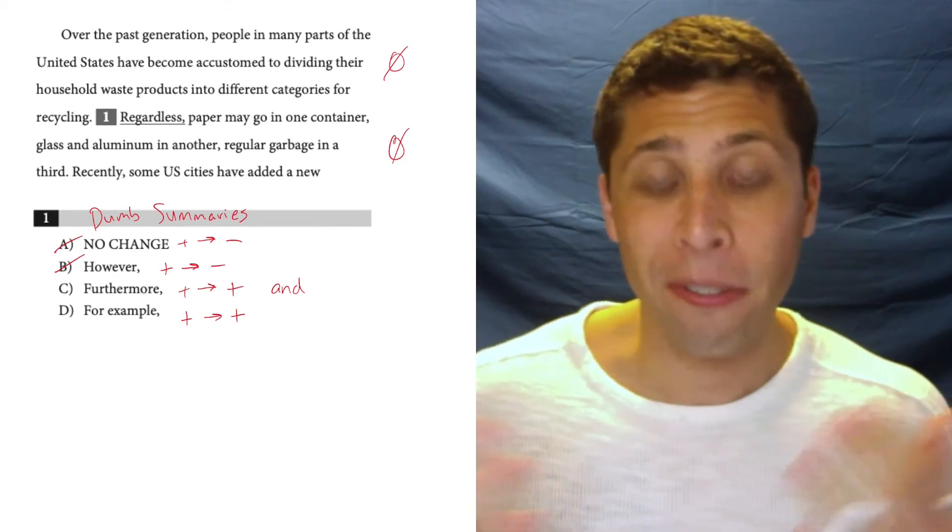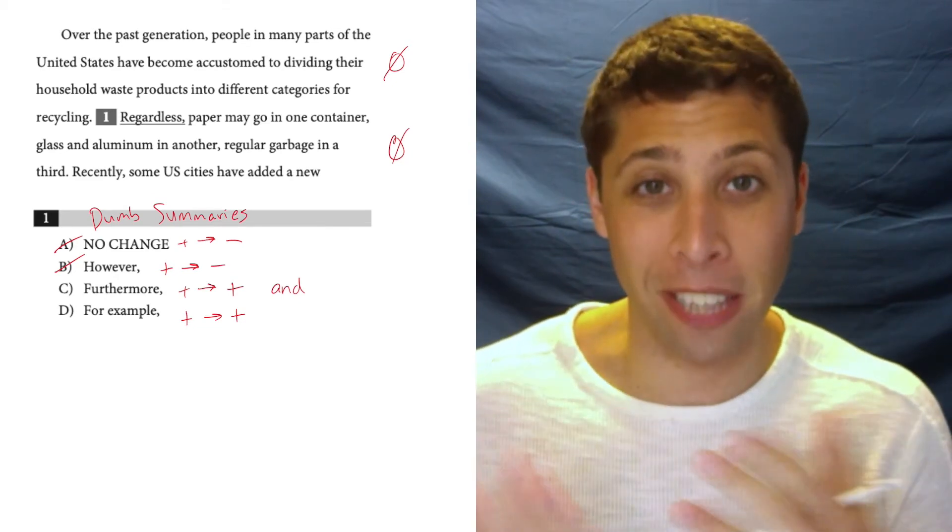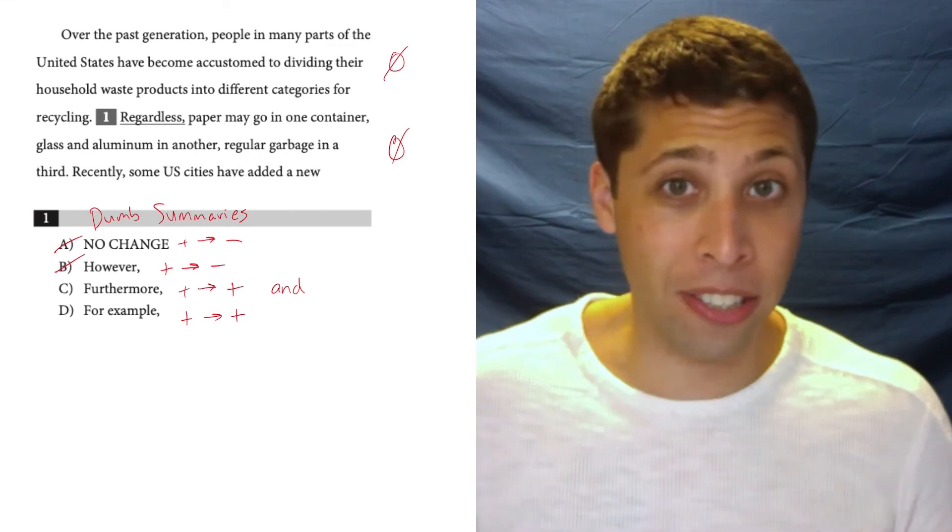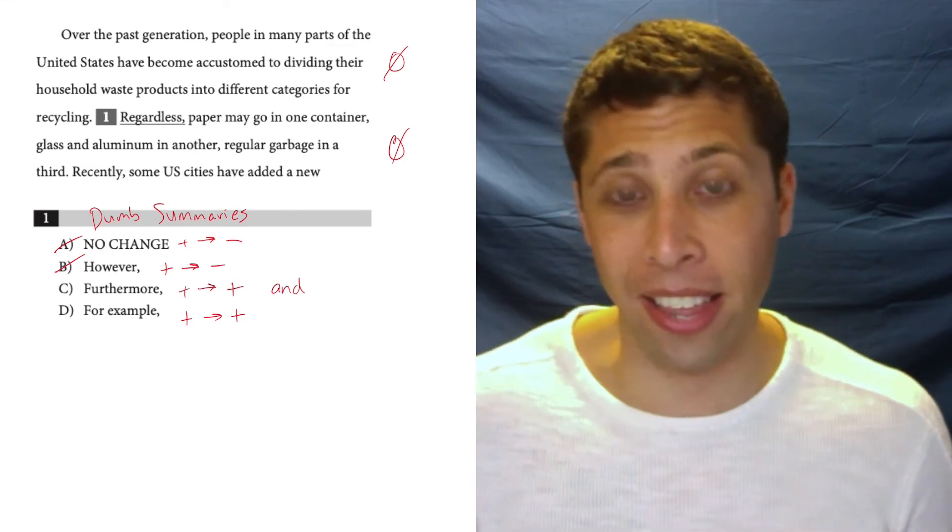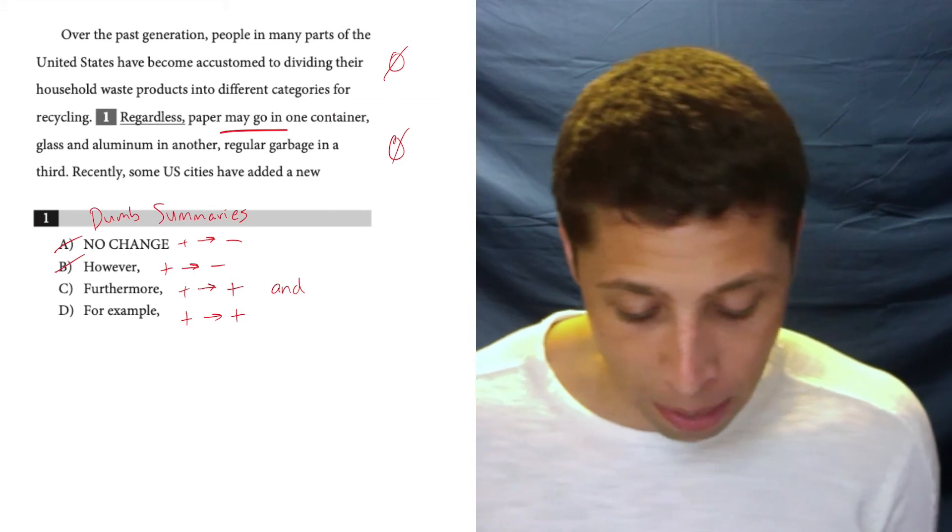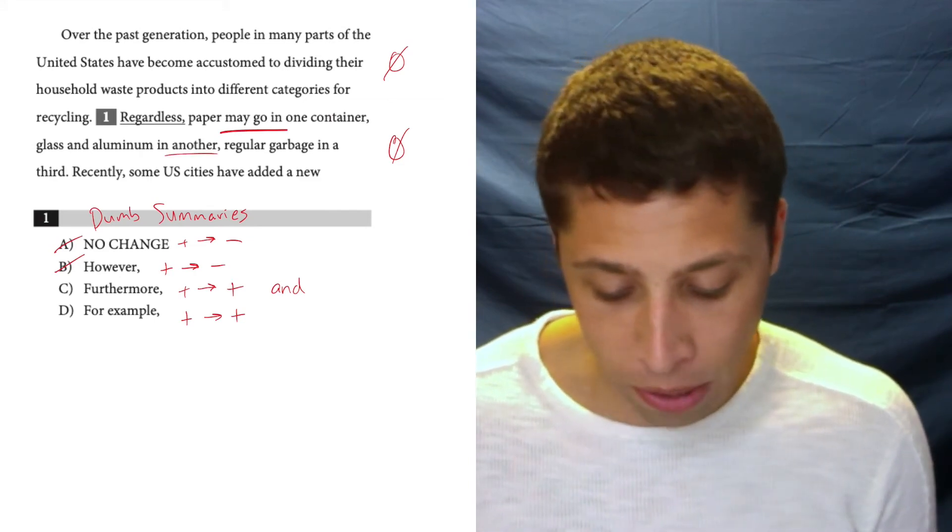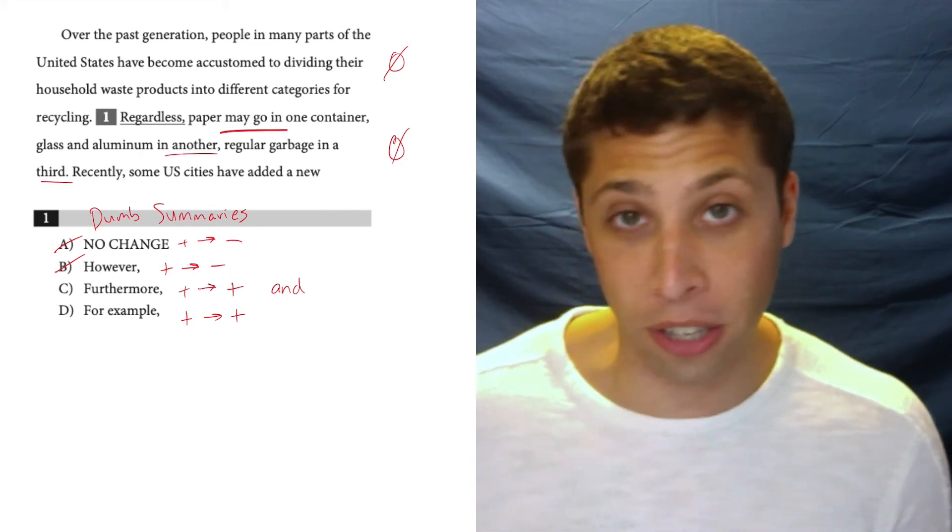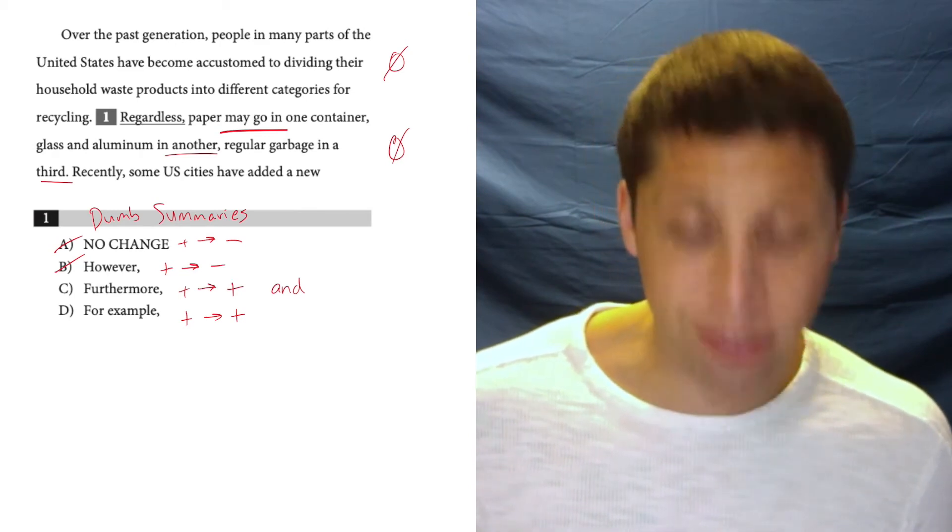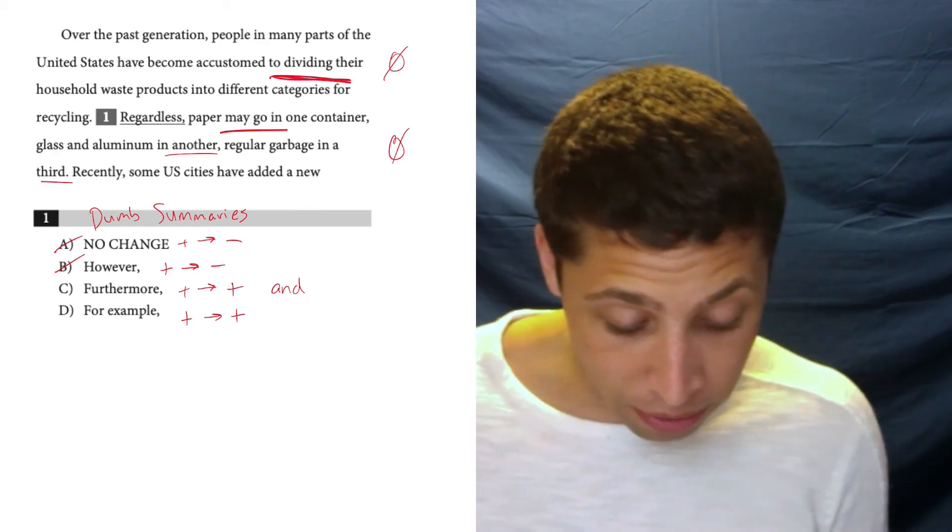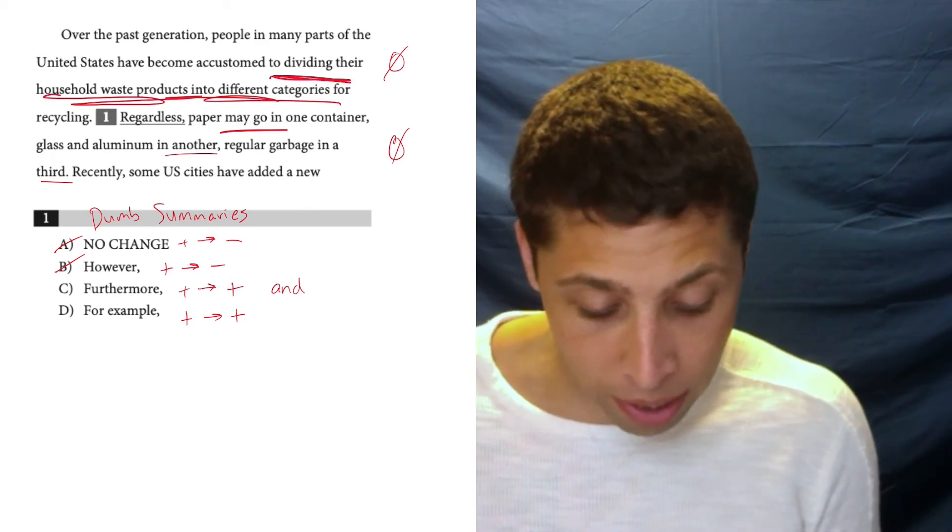For example means for example, right? It's giving us an example. So, really I just have a simple question to ask. Is the second thing an example of the first thing? Well, the second thing is talking about paper going in one container, aluminum and glass going in another, regular garbage in another container. That sounds like an example of dividing your waste products into different categories.